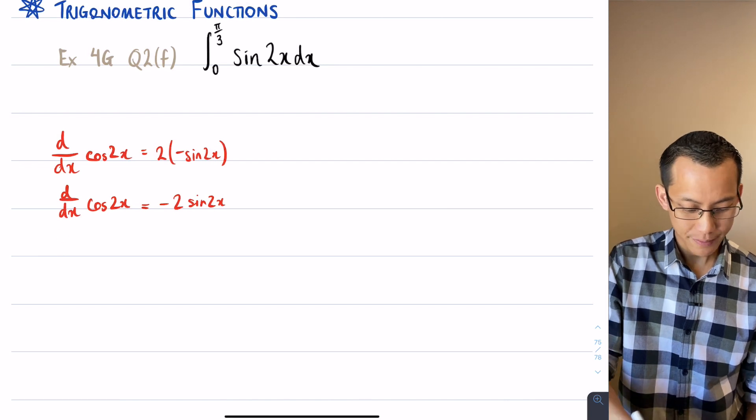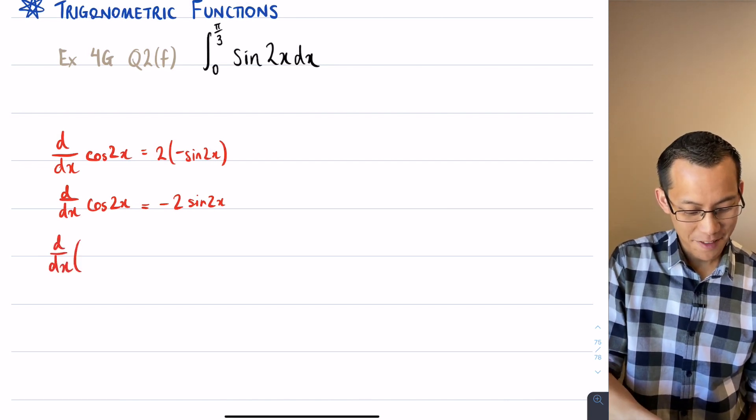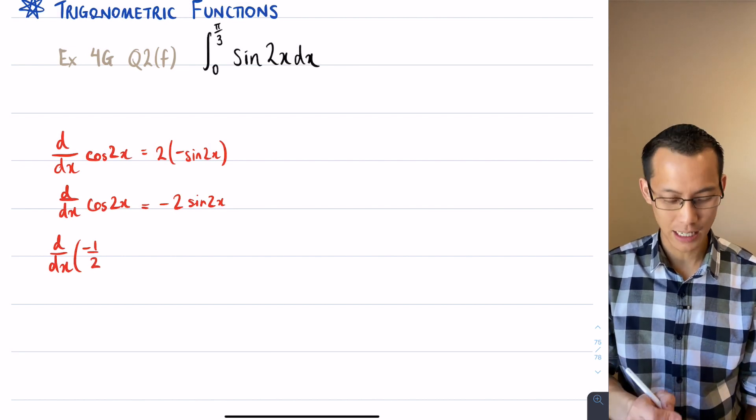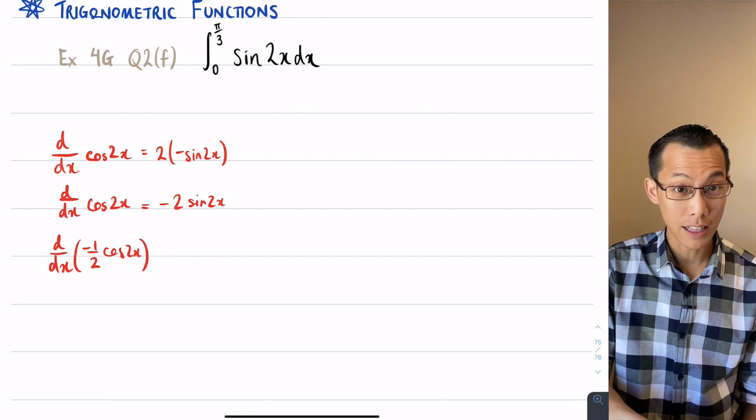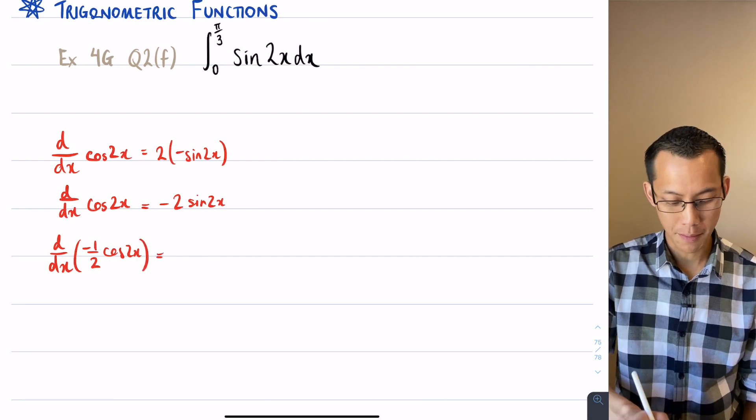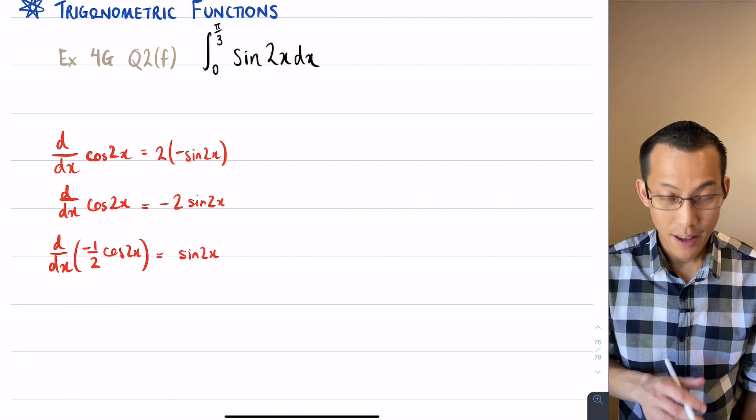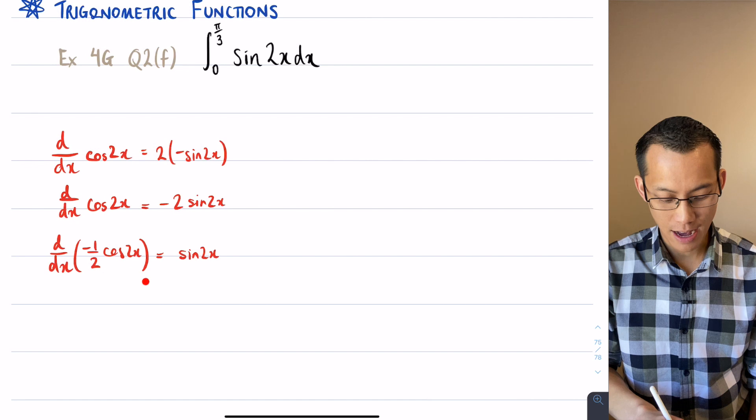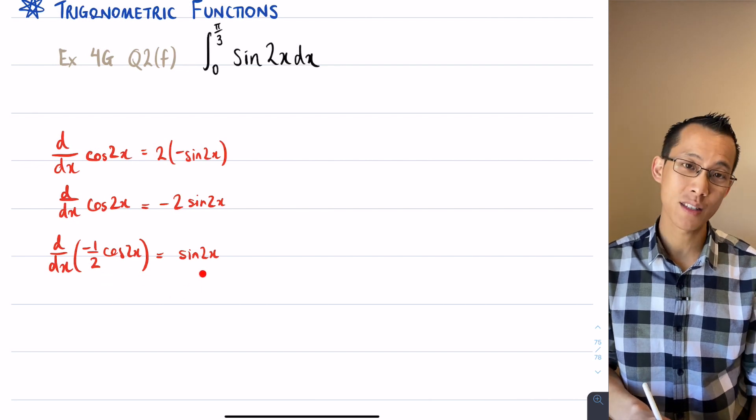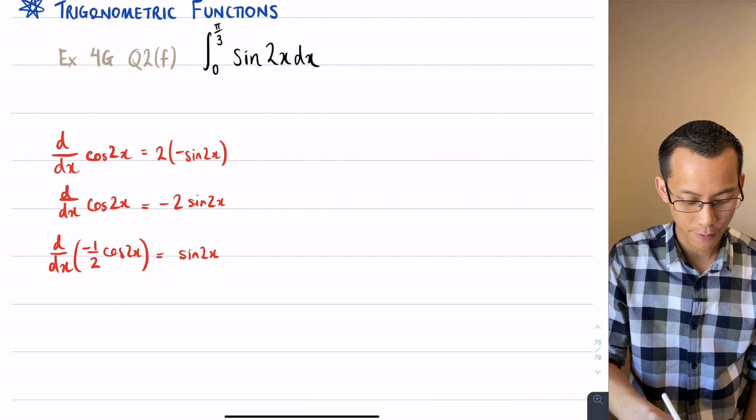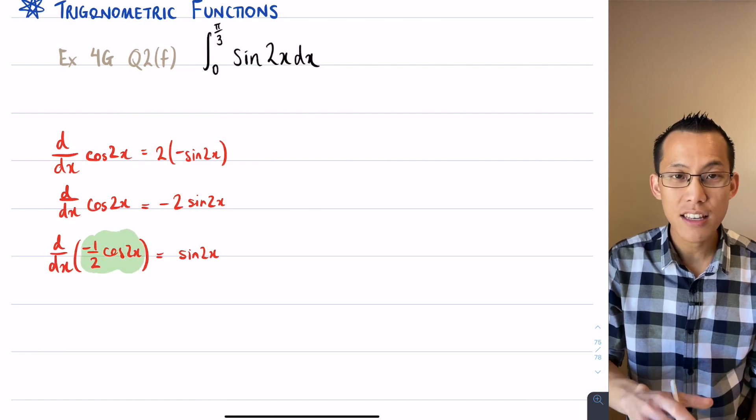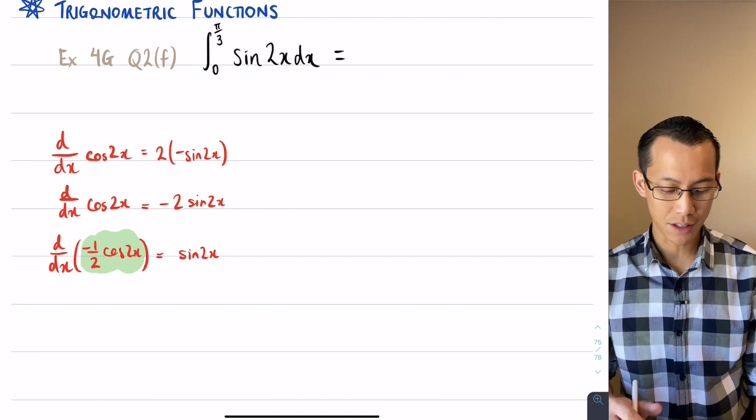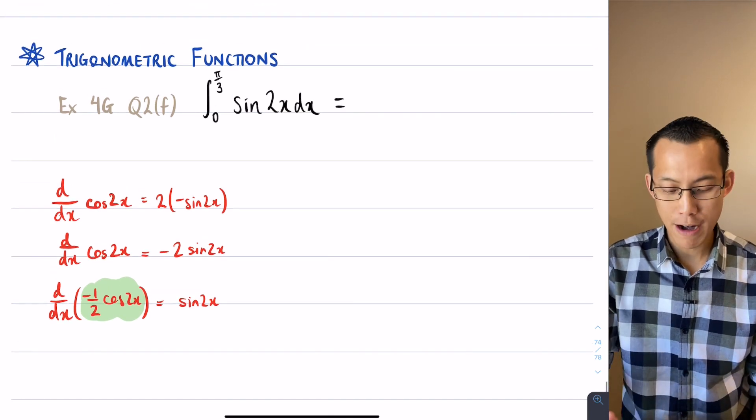If I divide by negative 2, it's the same as multiplying by negative 1 half. That would give me this on the left hand side, dividing by negative 2, and on the right hand side it would give me this. Success, this is what I want. This is the thing that if I differentiate it, I would land at sine 2x. So this guy here is the primitive that I'm searching for. Now that I've got that in my mind and I've worked it out on the side here, I'm ready to re-approach this integral.